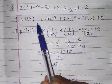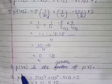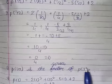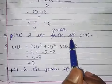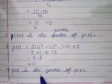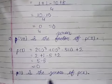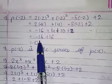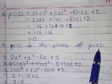Let us find whether these are zeros or not. P of half first — it is equal to 0, so half is a zero of P(x). P(1) is also 0, so 1 is a zero of P(x). And P(minus 2) also becomes 0, so minus 2 is a zero of P(x).